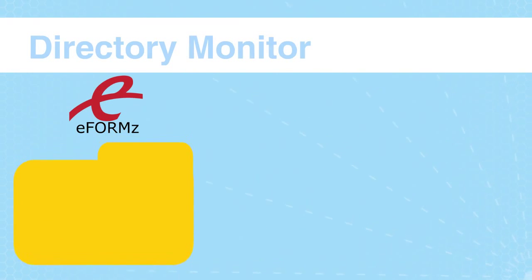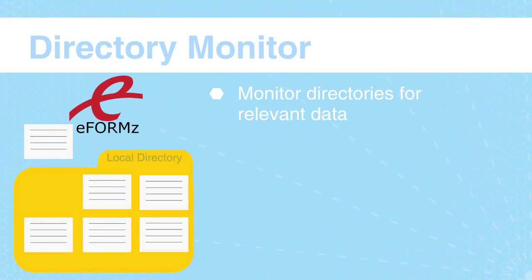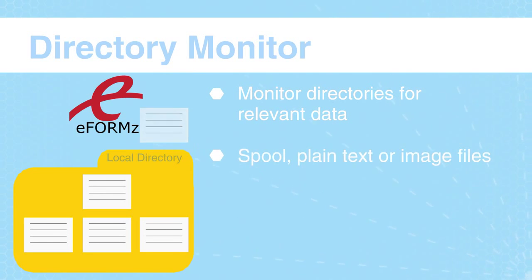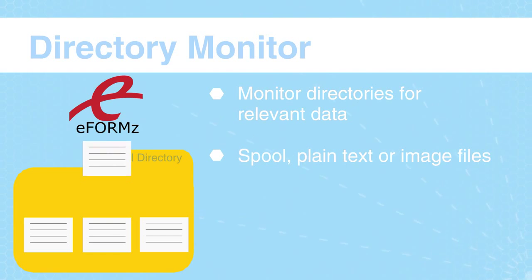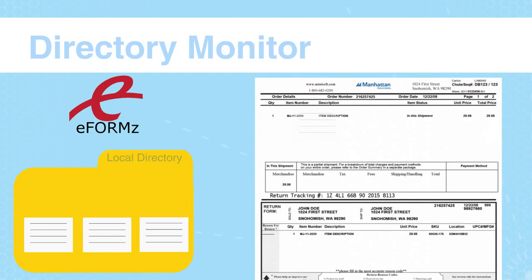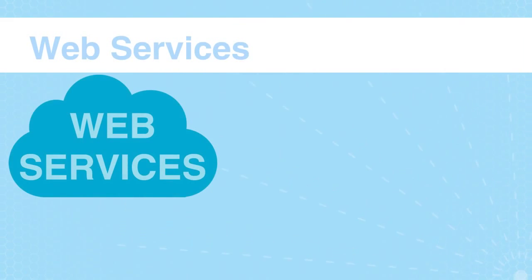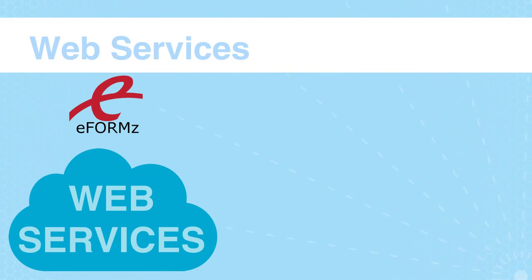For a different method, configure eForms to monitor local and remote computer directories to capture data. This data can include spooled print files, plain text files from legacy systems, or images. eForms extracts data from the captured files, formats them, places them on your form or label, and finally sends the form or label to the printer.